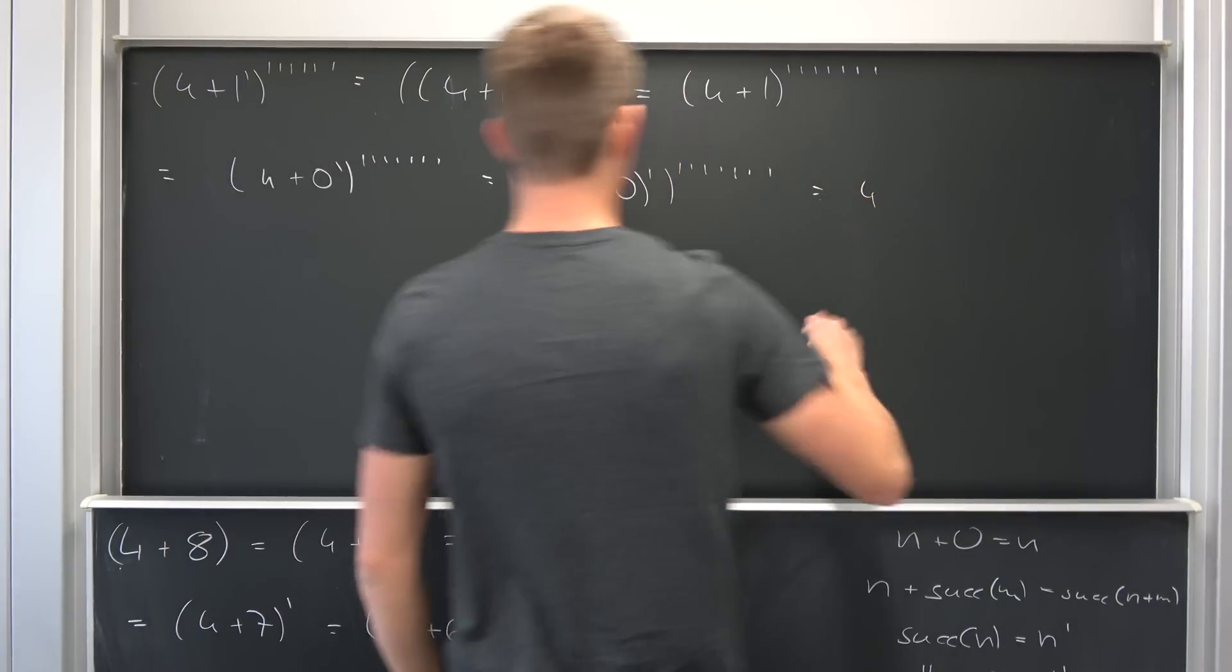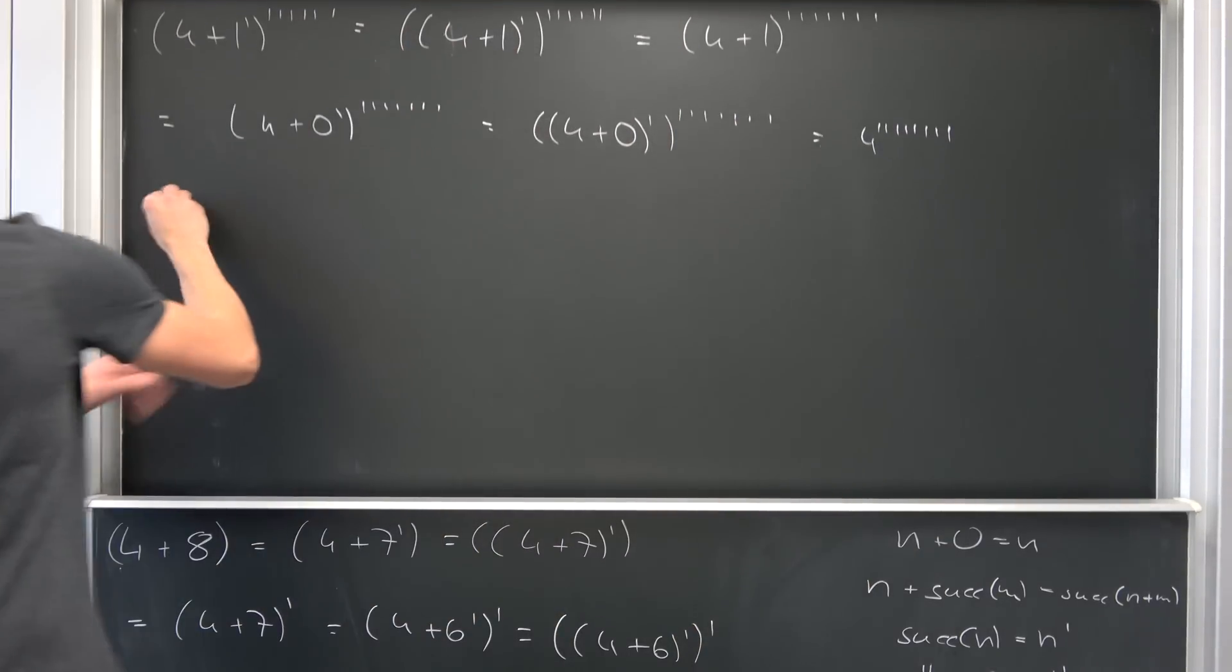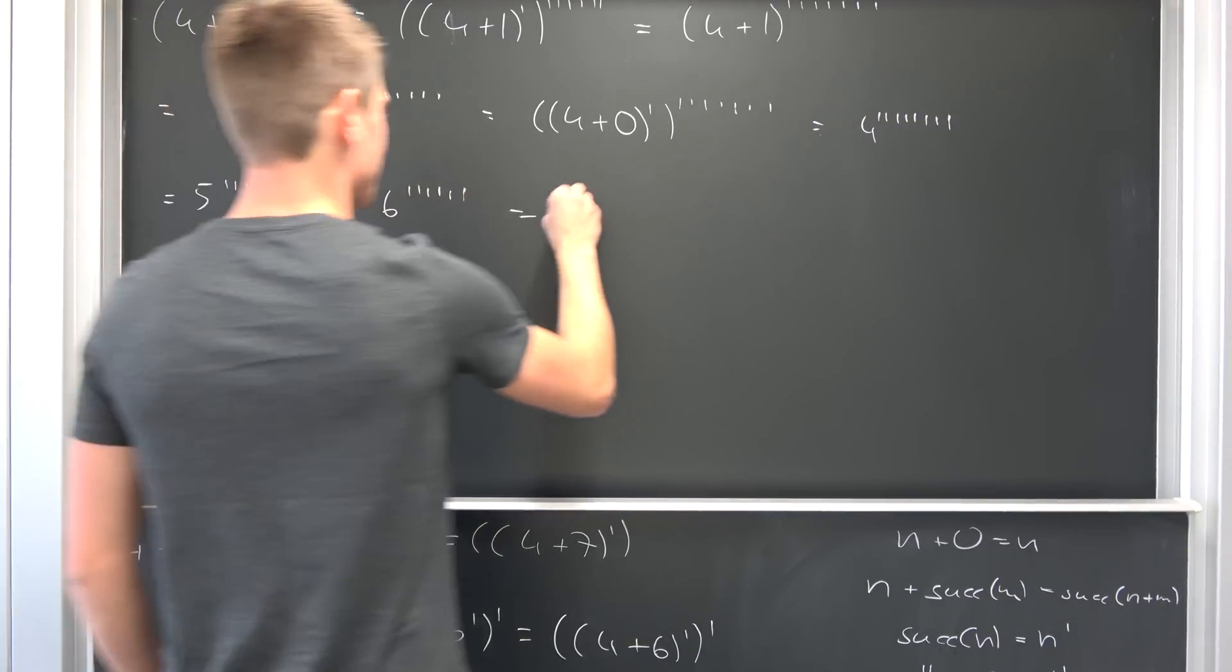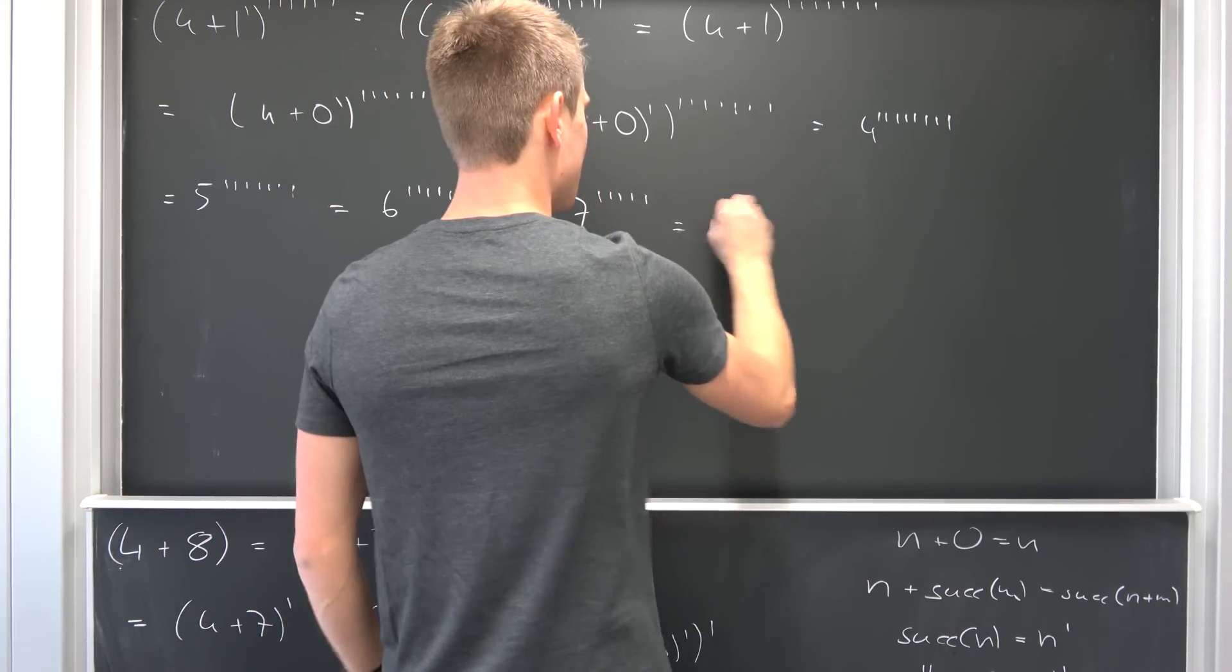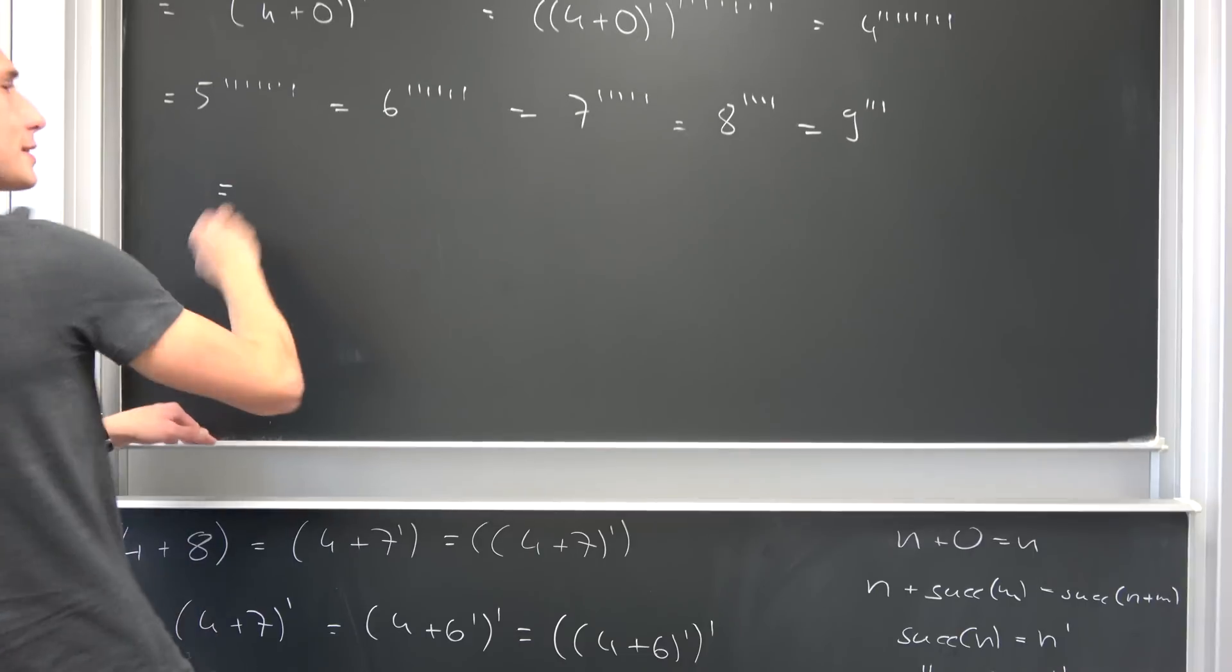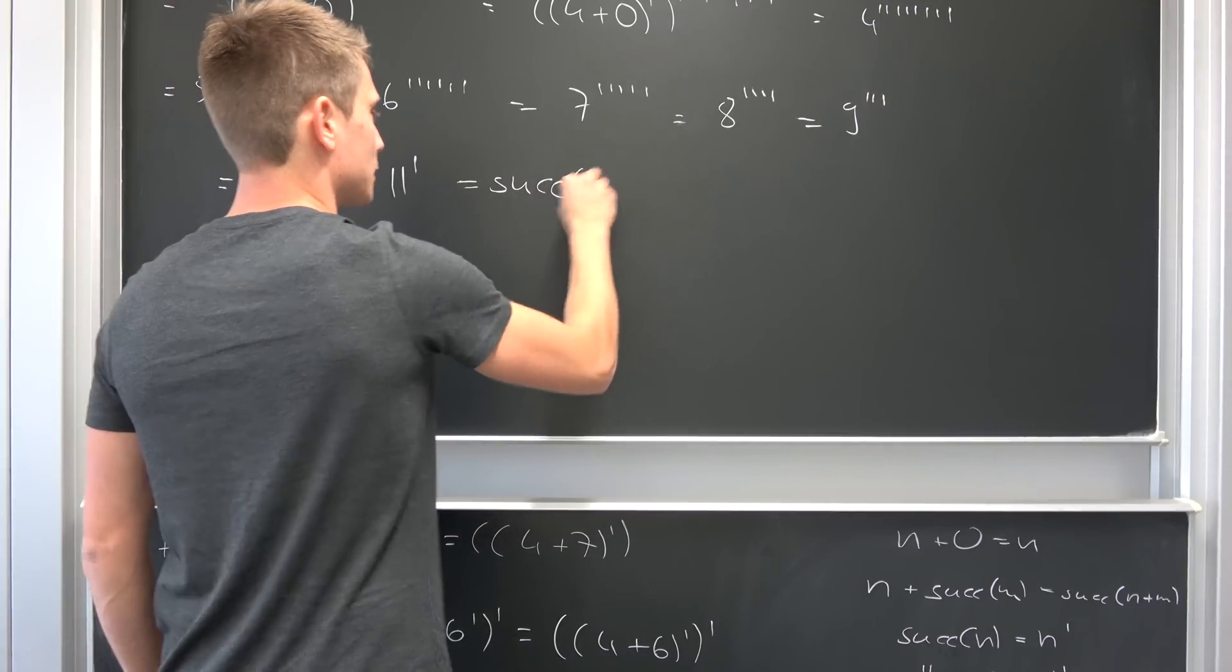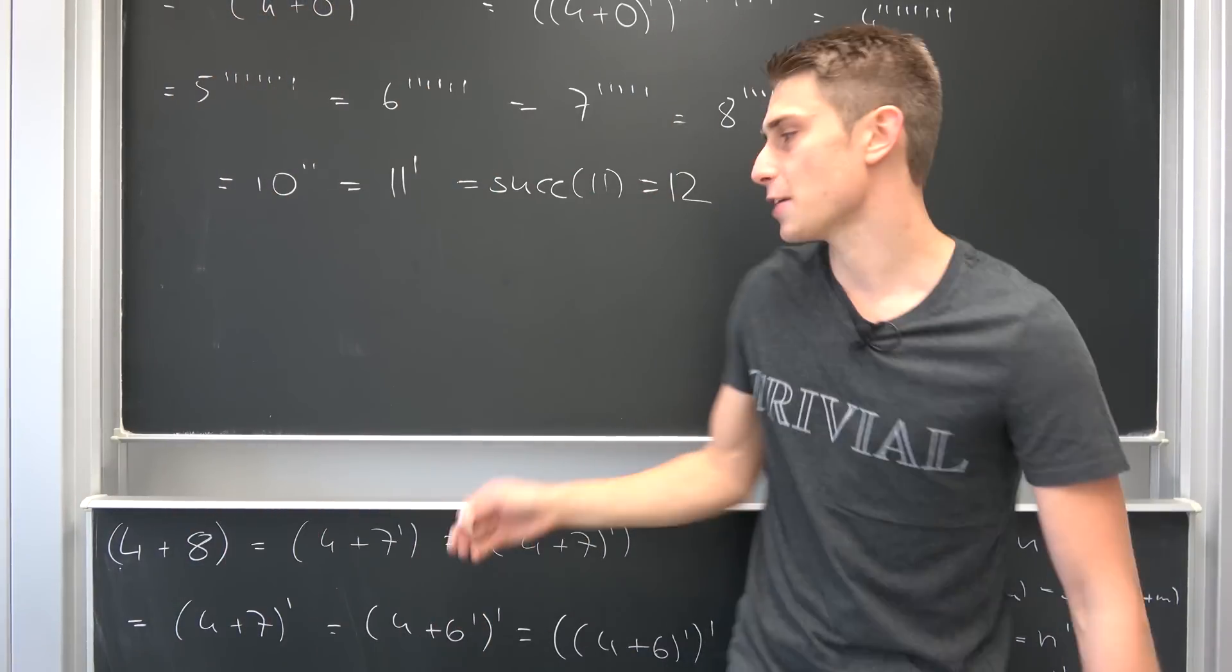So, this is nothing but 4. But this is nothing but 5. This is nothing but 6. This is nothing but 7. This is nothing but 8. This is nothing but 9. This is nothing but 10. This is nothing but 11 prime, which is nothing but successor of 11. And this is 12. And then we are done.